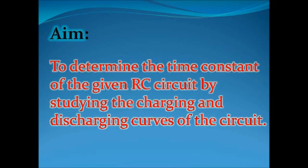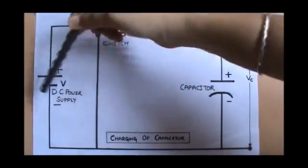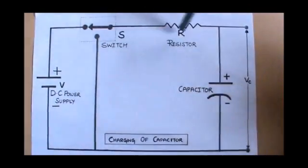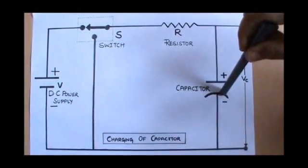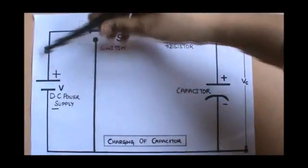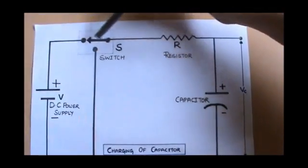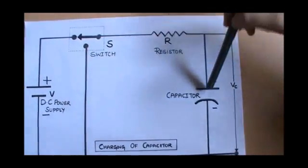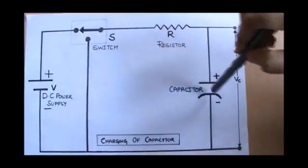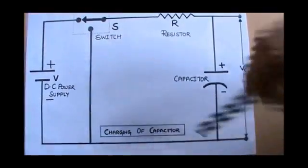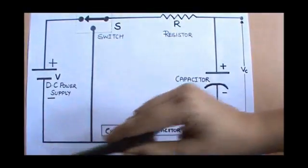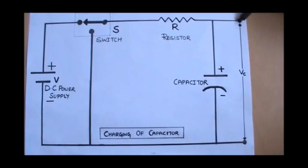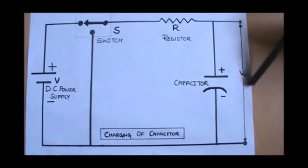The circuit diagram is shown in the figure. It consists of a DC power supply, switch, resistor, and capacitor. The positive of the DC power supply is connected to the switch, and the switch is connected to the resistor. The resistor is connected to the positive of the capacitor, and the negative of the capacitor is connected to the DC power supply negative. The output is taken across the capacitor.